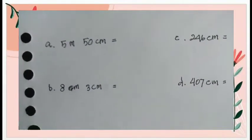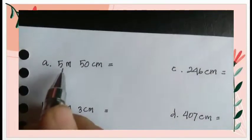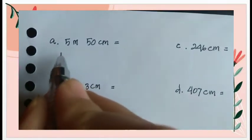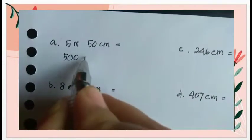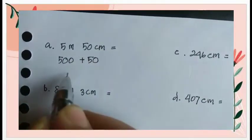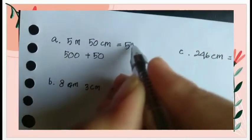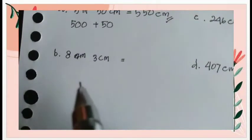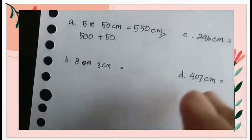Oke kita lanjut. Ini soal yang tadi teman-teman kita kerjakan bersama-sama. Jika ada 5 meter 50 sentimeter, maka berapa? 5 meter, dari 1 meter sama dengan 100 sentimeter, jadi kita tambah nol dua karena turun 2 tangga, menjadi lima ratus. Kemudian ditambah 50, jadi 500 ditambah 50 yaitu 550 sentimeter.